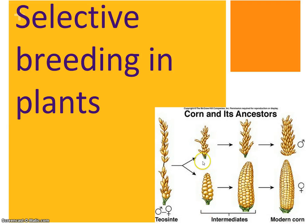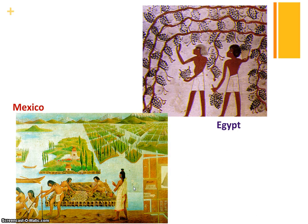We have selective breeding in plants and we're going to use corn as our example. Corn today probably looks like modern corn, but it didn't always look like that. Long, long ago it looked quite different. Corn has been grown in Mexico for centuries, and of course in Egypt for many, many centuries. So we have a lot of history of growing corn in agriculture as humans.